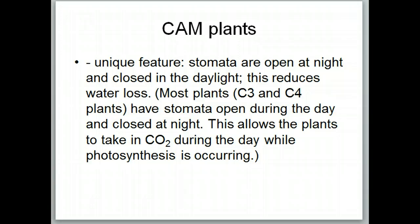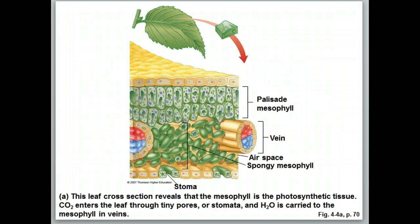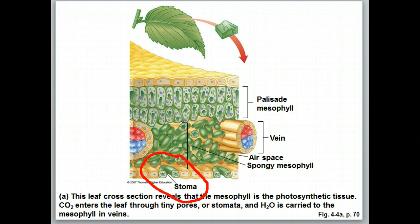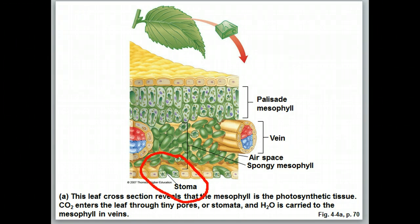Recall that most plants — all your C3 and C4 plants — have the stomata open during the day and closed at night. When the stomata are open during the day, it allows carbon dioxide to be taken up during the day while photosynthesis is occurring. Here's our cross section of the leaf. The stoma is this opening in the epidermis of the leaf, and the guard cells on either side can open and close it. In all the C3 and C4 plants, the stoma is open during the day, allowing carbon dioxide to enter, but also allowing a tremendous amount of water vapor to be lost from the plant.